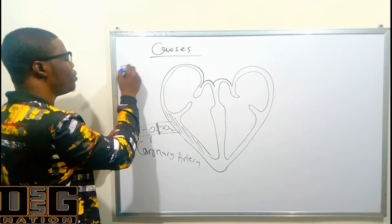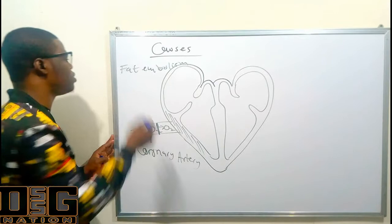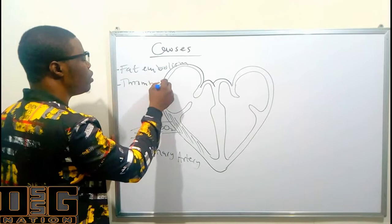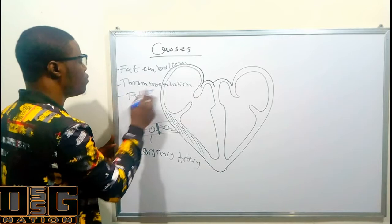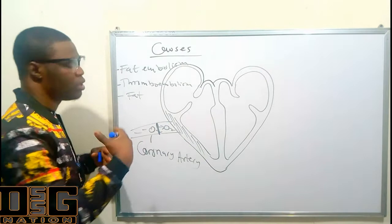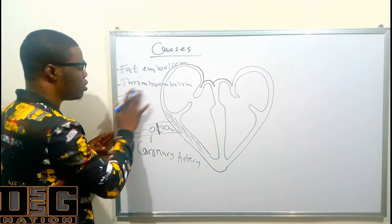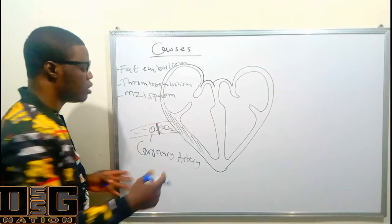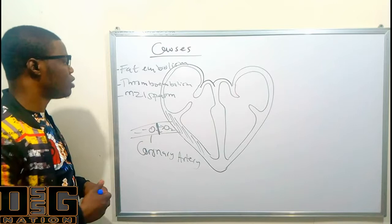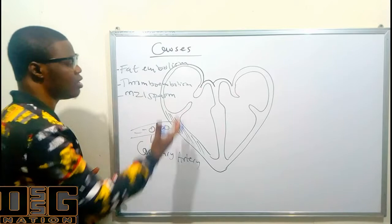Examples of things that can cause coronary artery occlusion include fat embolism, thromboembolism, and vasospasm. Vasospasm can also lead to coronary artery occlusion. Let me explain how fat embolism, thromboembolism, and vasospasm can lead to angina pectoris.